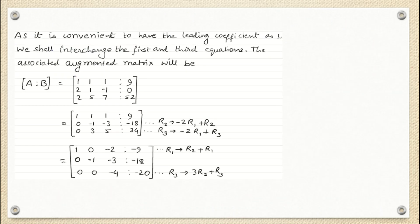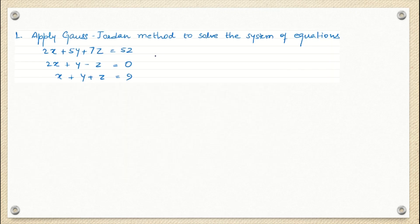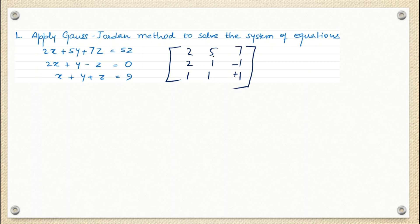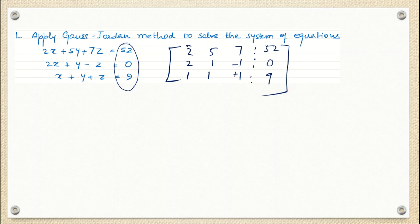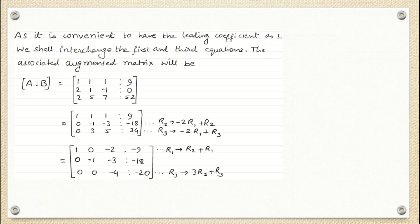The coefficient matrix is written, and we augment the right-hand side constants to form the augmented matrix. My very first step is to get a 1 at the first row, first column position. For that, I interchange row 1 with row 3. Whatever operation I perform must also be performed on the augmented column, the same as in Gauss elimination. The next goal is to convert the two elements below the leading 1 into zero by performing two row operations.